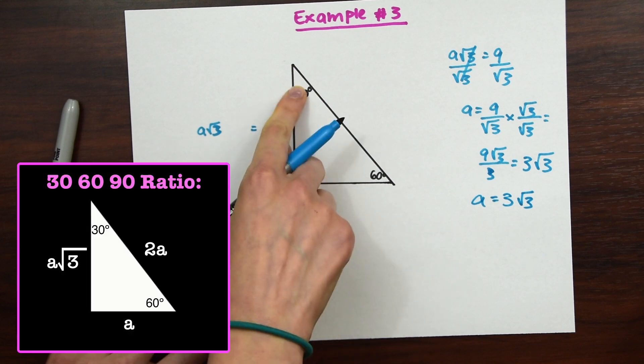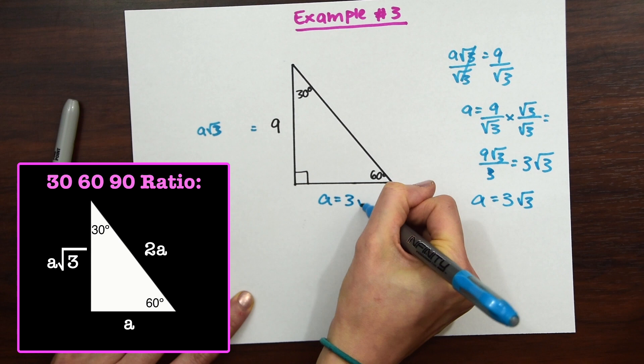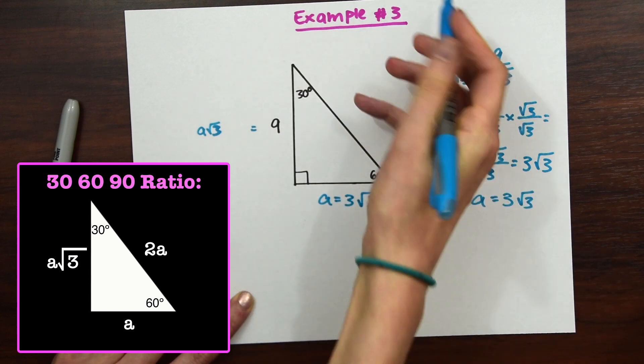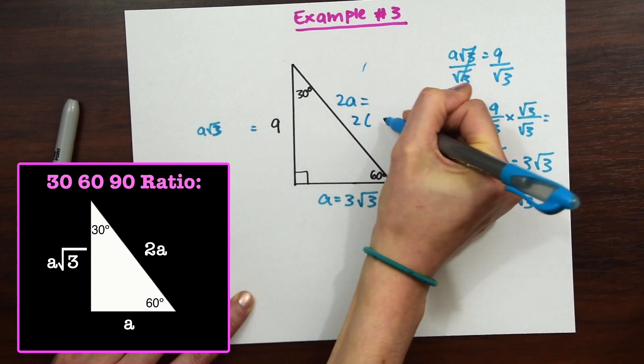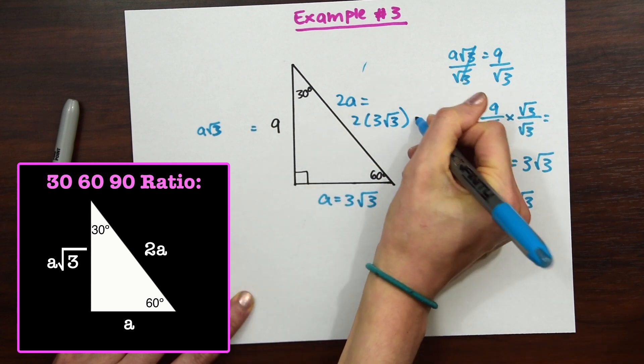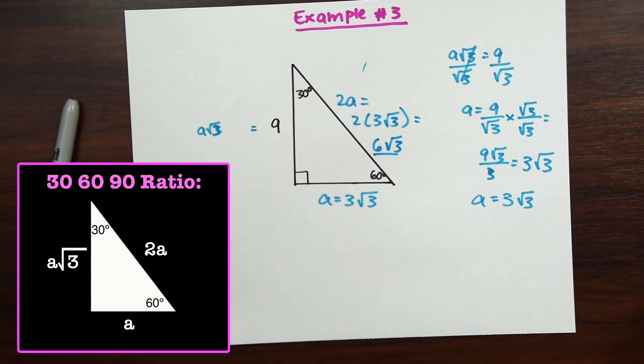So A is equal to 3 rad 3. So remember A is always across from 30 degrees, so we're just going to put A equals 3 rad 3. And then over here, our hypotenuse is always 2A, which is going to be 2 times 3 rad 3. So we're just going to multiply these whole numbers, 2 times 3, which gives us 6 rad 3. We're going to leave the radical the same. So that's our answer.